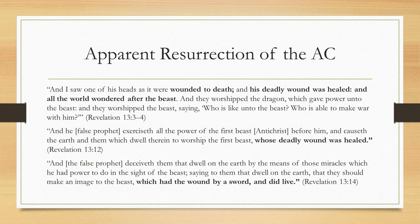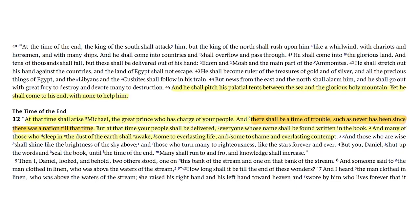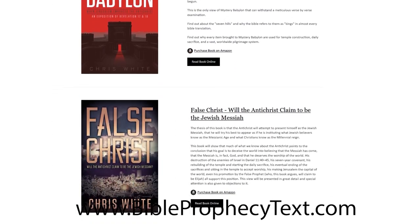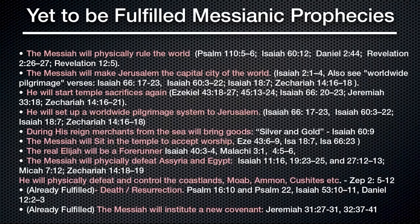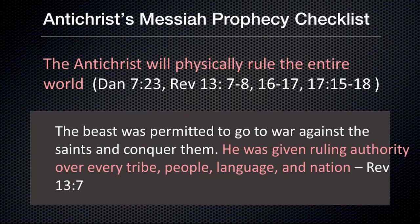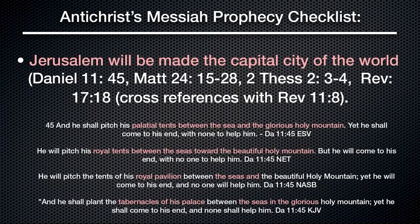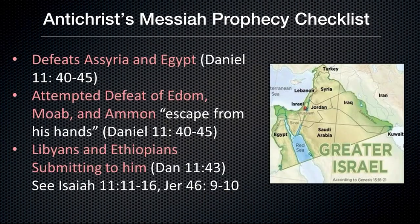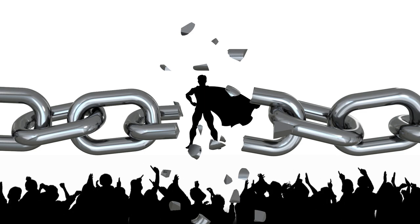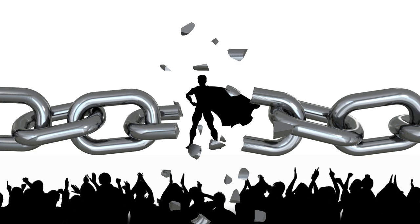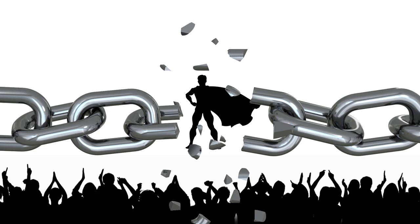He reshapes that entire world government into a completely different system based on his literal worship. This happens after his apparent resurrection, which I would argue happens just before the midpoint. In my books — like False Christ or Mystery Babylon, available free at BibleProphecyText.com — I argue that every single thing the Antichrist does, including sitting in the temple, declaring himself to be God at the midpoint, and demanding worship, is an attempt to be seen as the real Messiah fulfilling prophecies the first-century crowd wanted Jesus to fulfill, like defeating specific enemies and setting up a world government with Jerusalem as its capital.